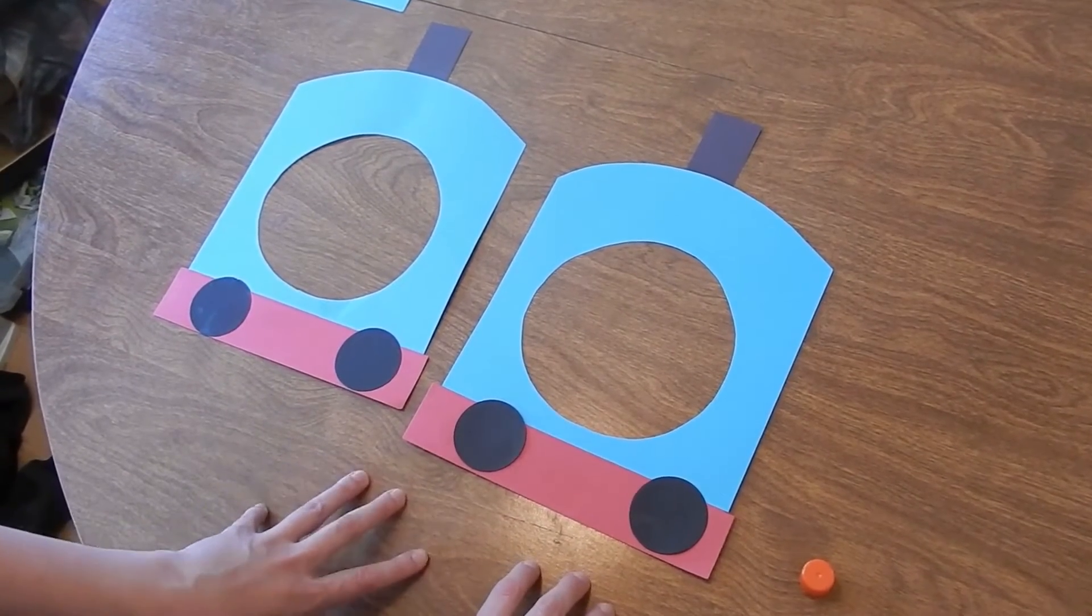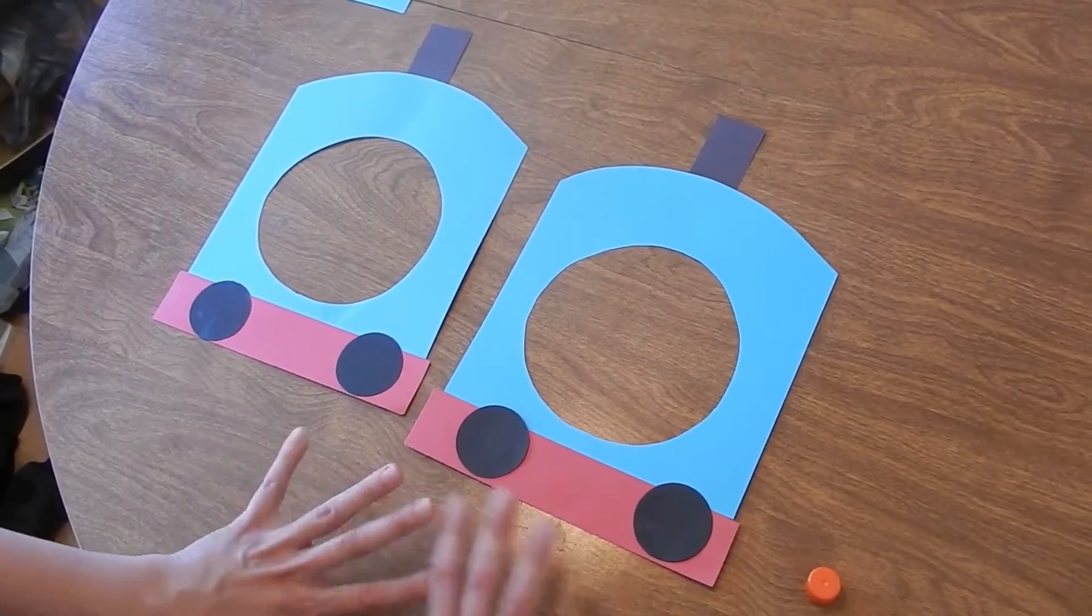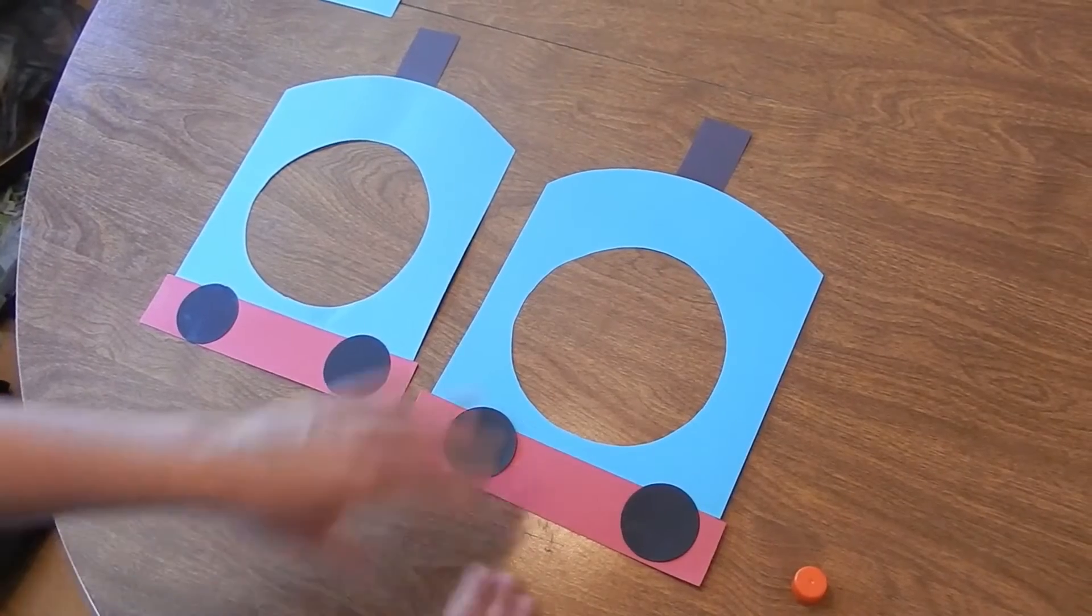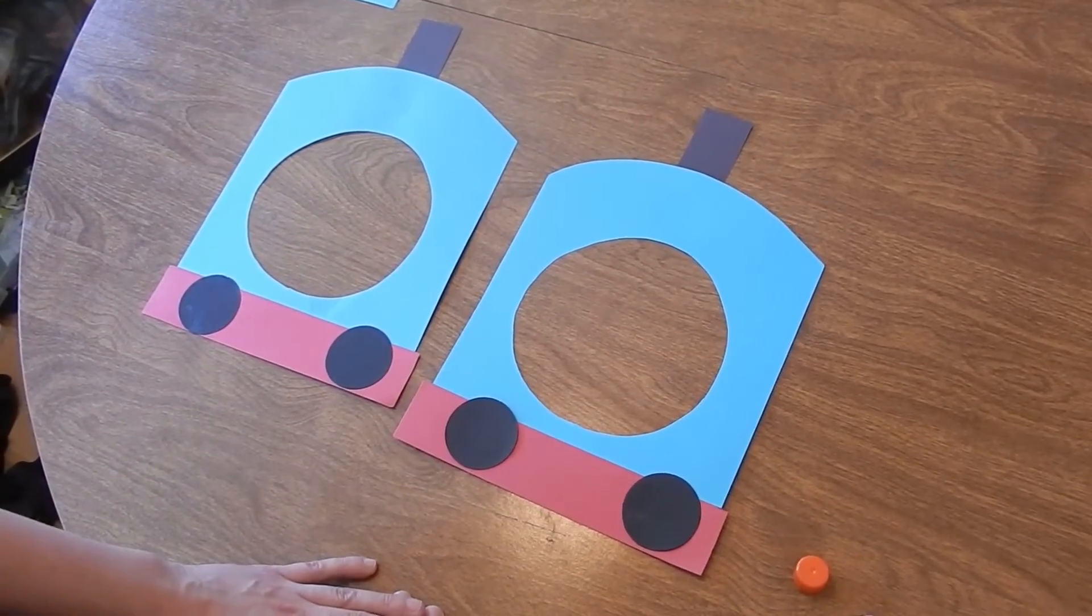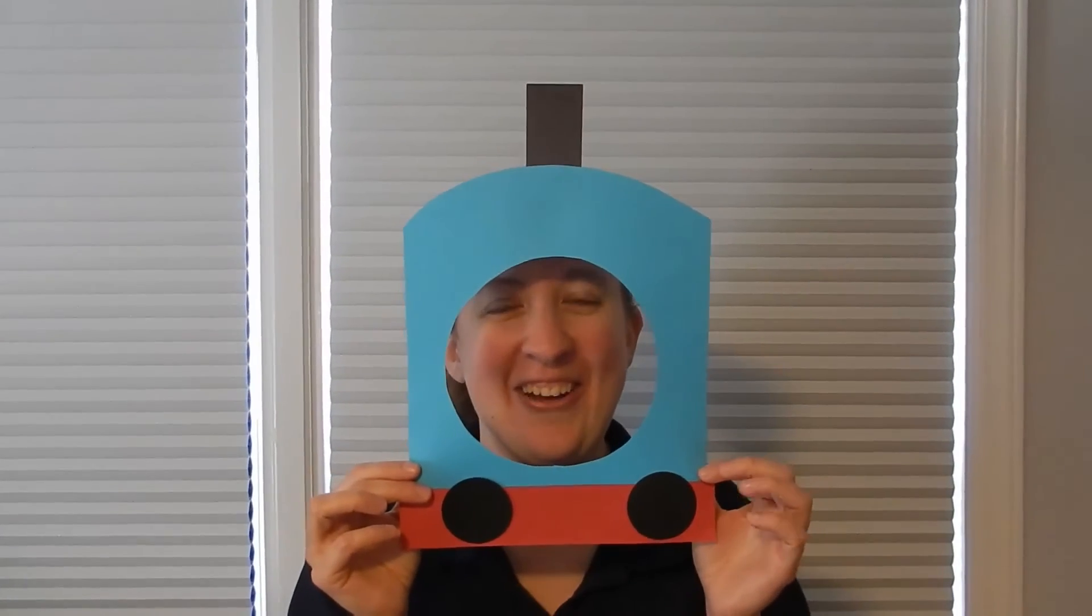You could even make Percy or Emily or James or any of your favorite Thomas characters. You would just have to change the color of your background. So there you have it. You just made your very own Thomas the Tank Engine mask. We'll see you next time.